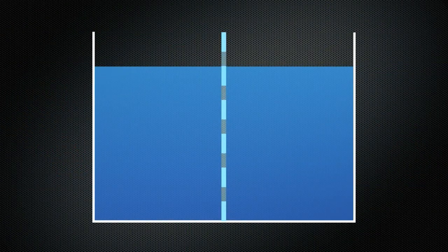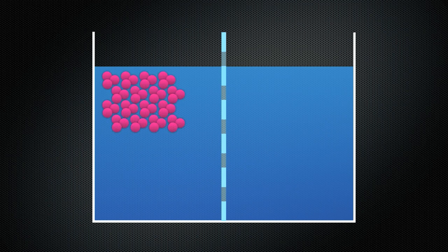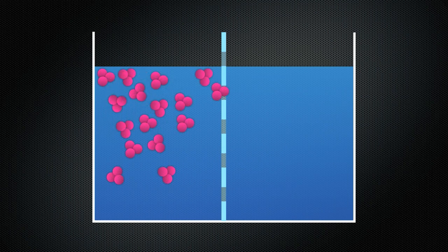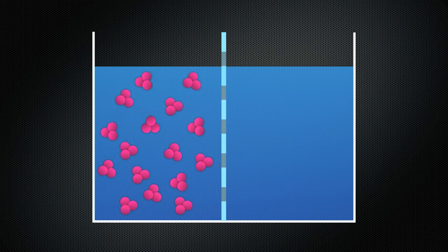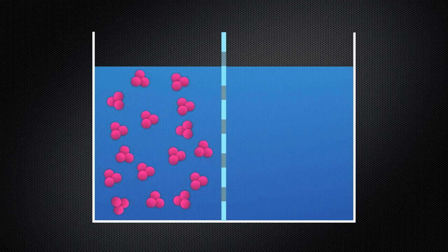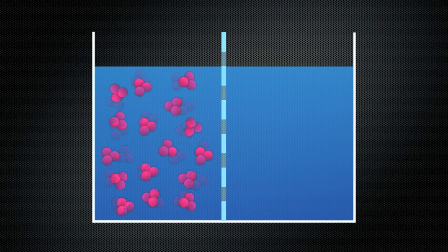Now let's look at a different situation. This time we add some large particles to the solution. They diffuse and spread out, but they are too large to cross the membrane. Because the particles can't cross, they remain concentrated on the side that they were added to. The term that refers to the number of atoms, ions, and molecules present per litre is osmolarity.